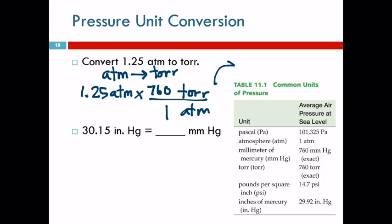So we'll put it up here because I ran out of room. The calculator says 950 torr. How many significant figures should that have? Three. Because the starting number had three. So I could put a decimal point there, or I could say 9.50 times 10 to the 2 torr. Any questions?